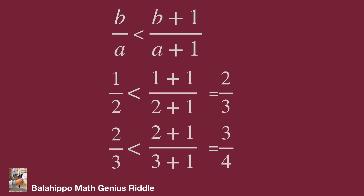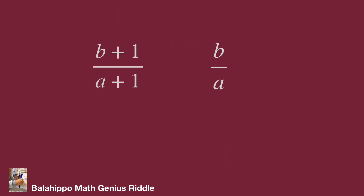It's pretty easy to understand, but how do we prove it is always true? If we would like to compare which is larger between b plus one over a plus one and b over a, we can use the subtraction method.